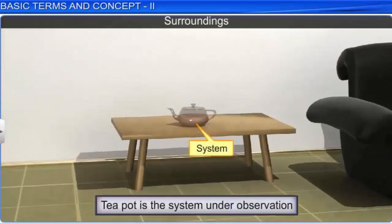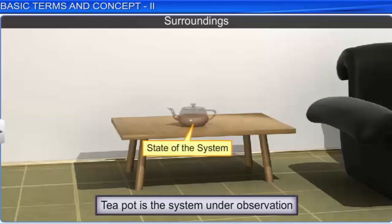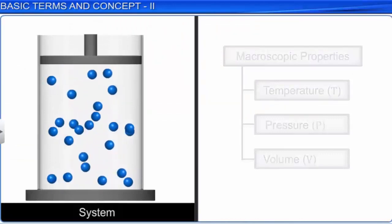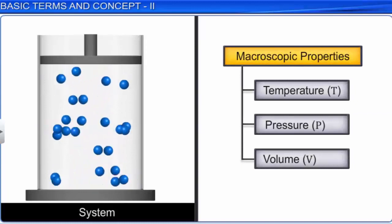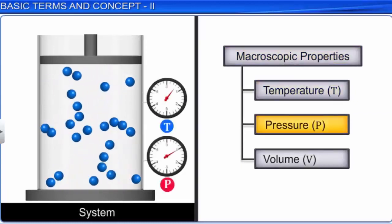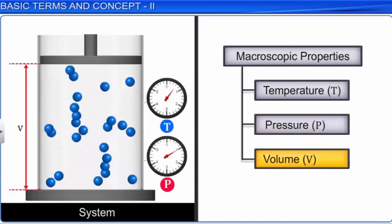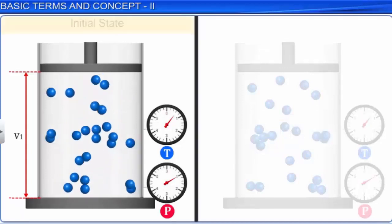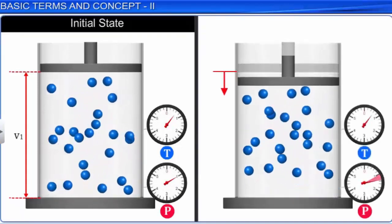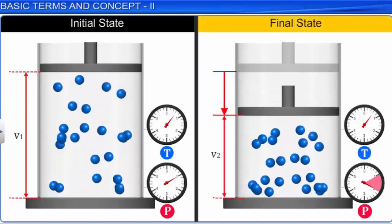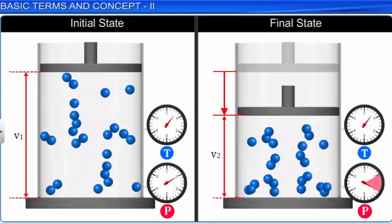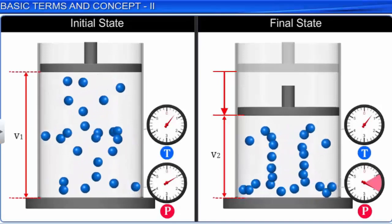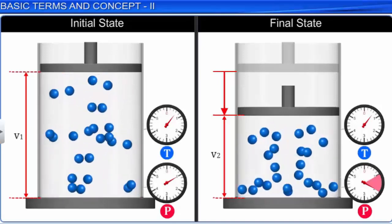A system is a part of the universe in which observations are made. In order to make these observations, it is important that we know the state of the system. By state of a system, we mean the condition of the system in terms of measurable macroscopic properties such as temperature T, pressure P, and volume V. The first state, before the change, is called the initial state, and the last state, after the change, is called the final state. These properties are called state variables or state functions — properties whose values depend only upon the initial and final states of the system, and are independent of the manner in which the change is brought about.